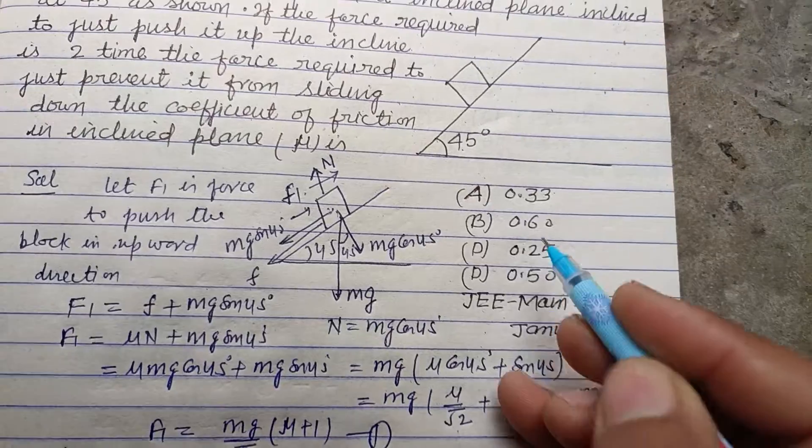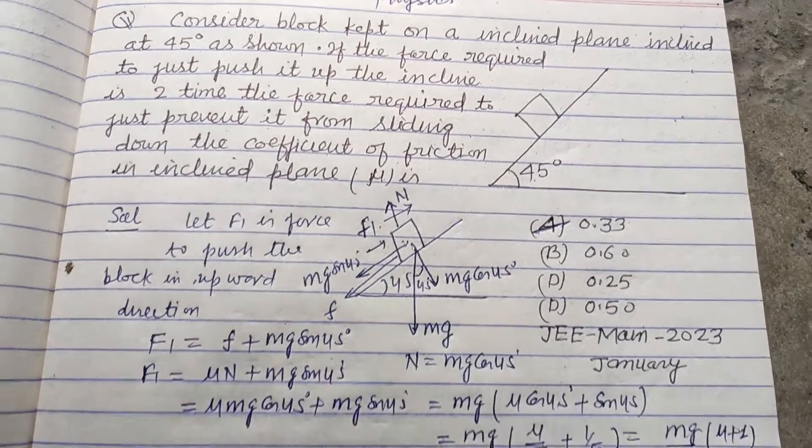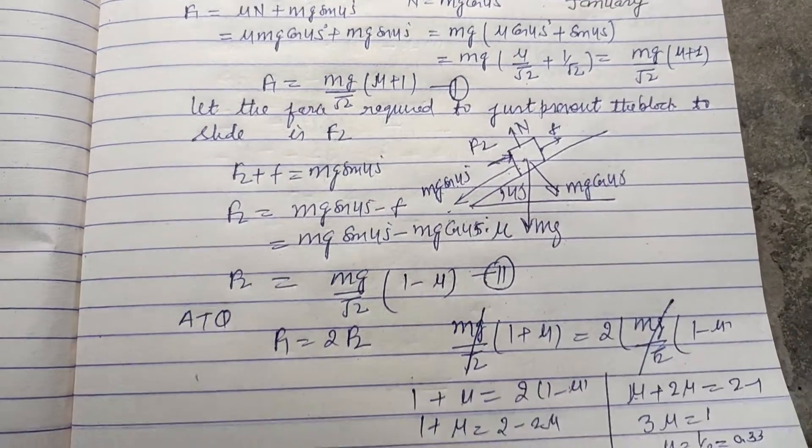Therefore answer is 0.33 which is found in option A, so option A is correct. I hope you got it. Please like the video, subscribe the channel, thanks for watching.